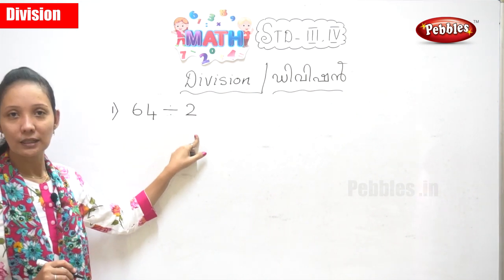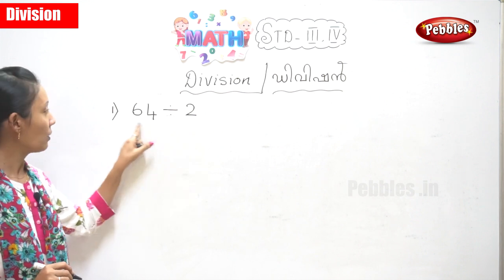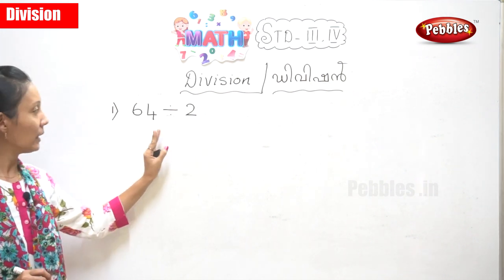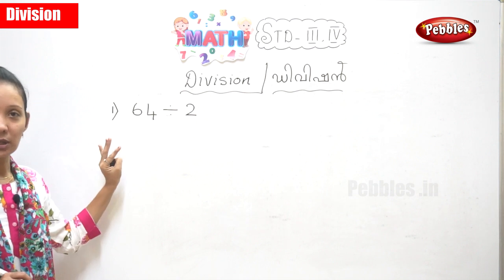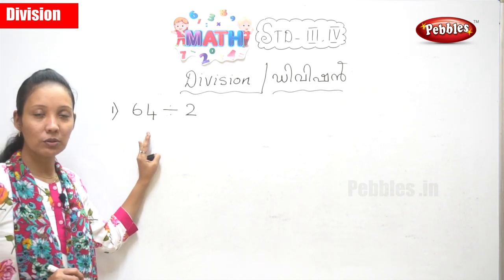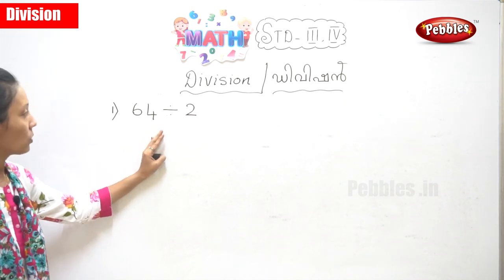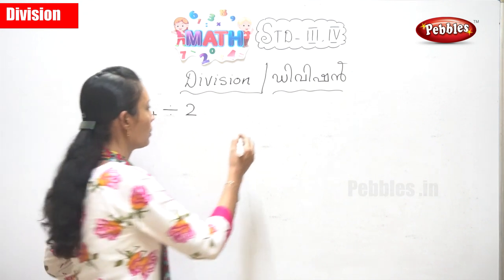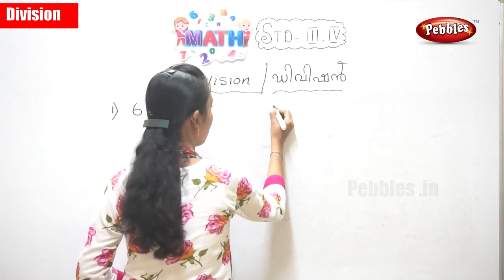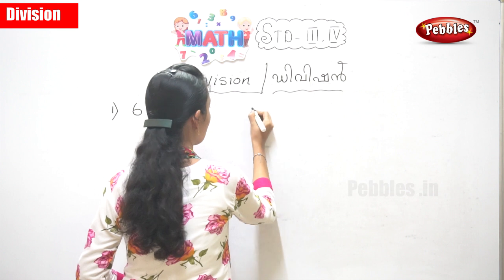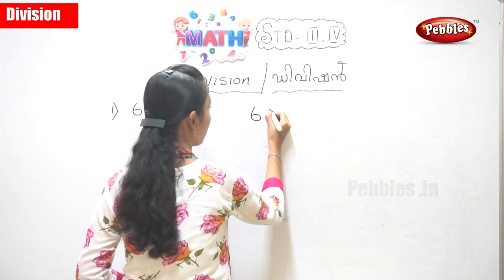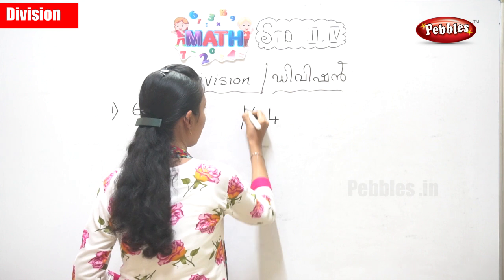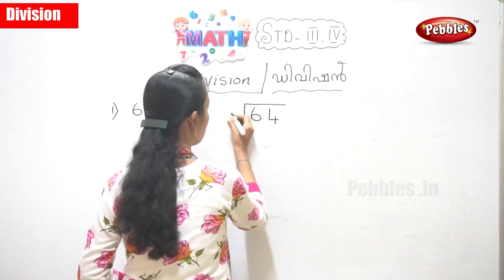64 divided by 2. Now can we see how you divide 64 by 2? Now what you're supposed to do — you have to do it here. You will write 64 divided by 2.